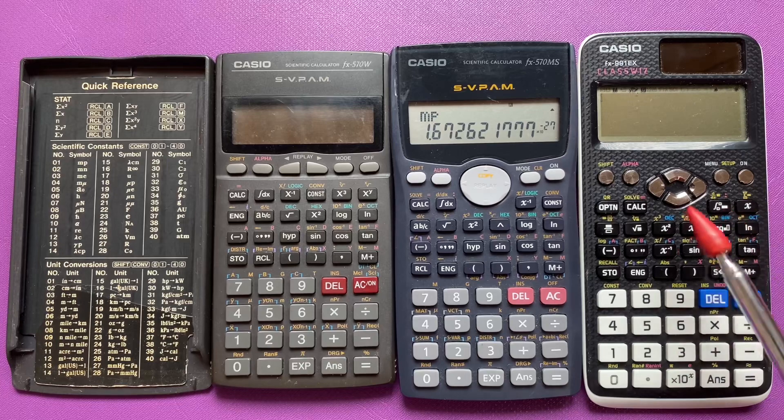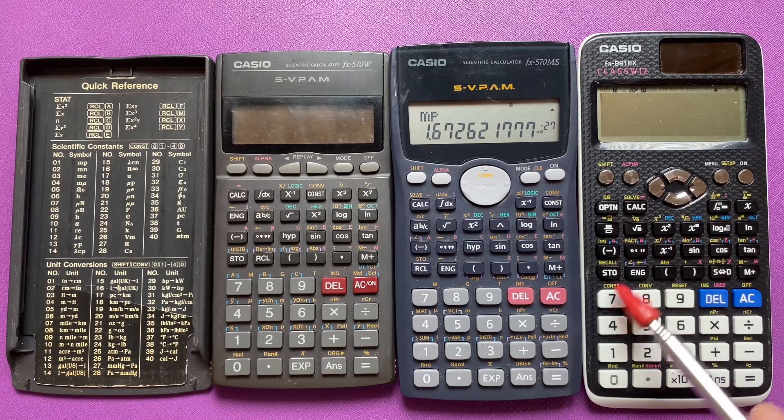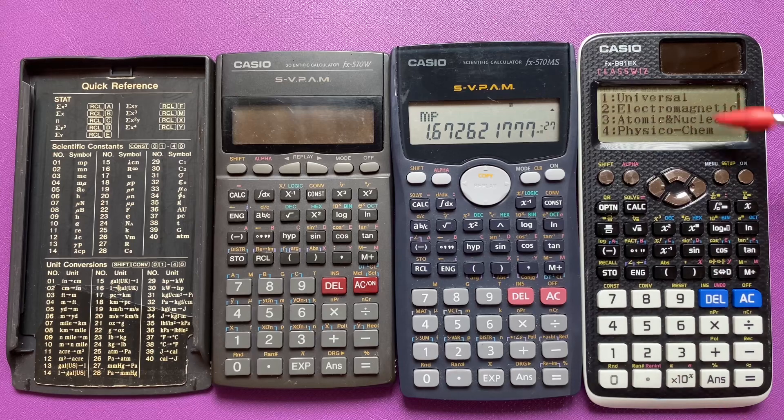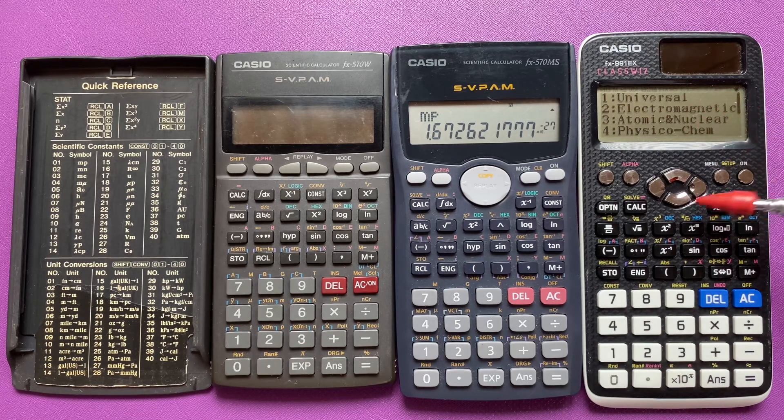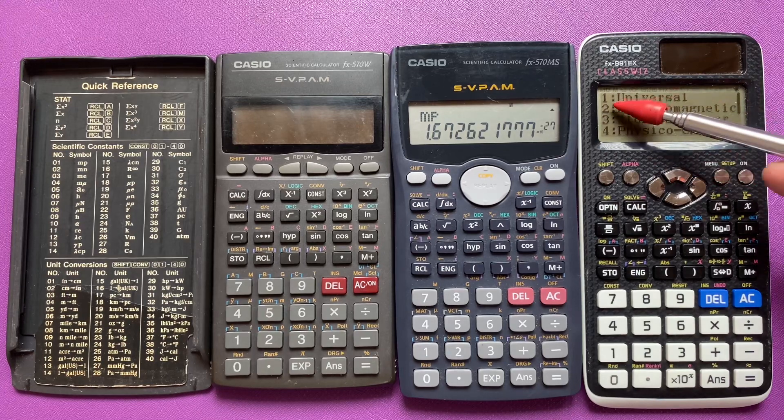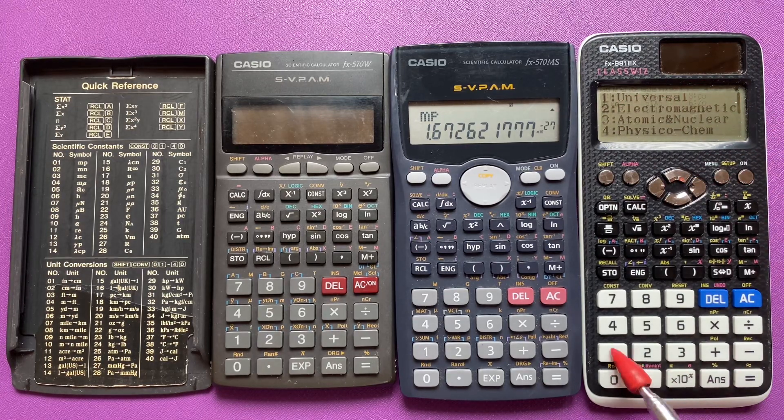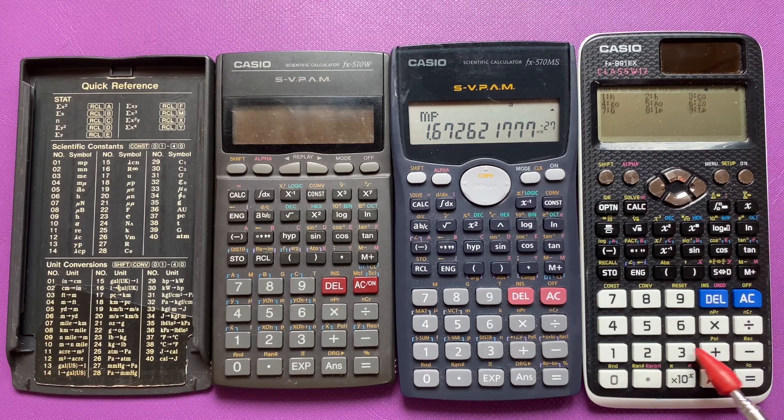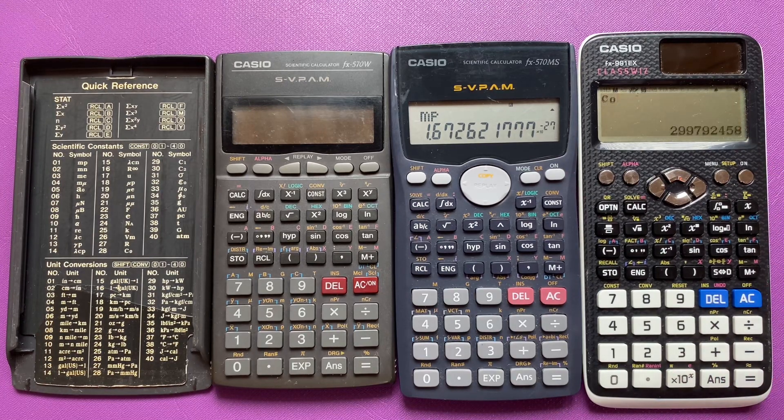Now the 991 EX or the 570 EX version actually groups them according to physics topics. You just need to press and it will call the constant in its own category group. So I press 3 for speed of light under universal constant.